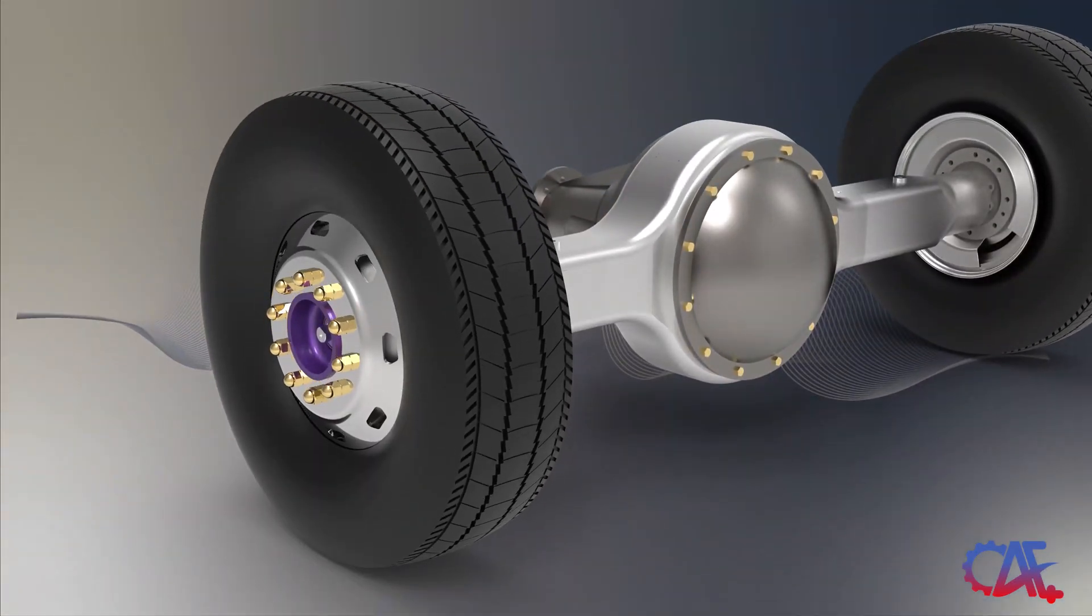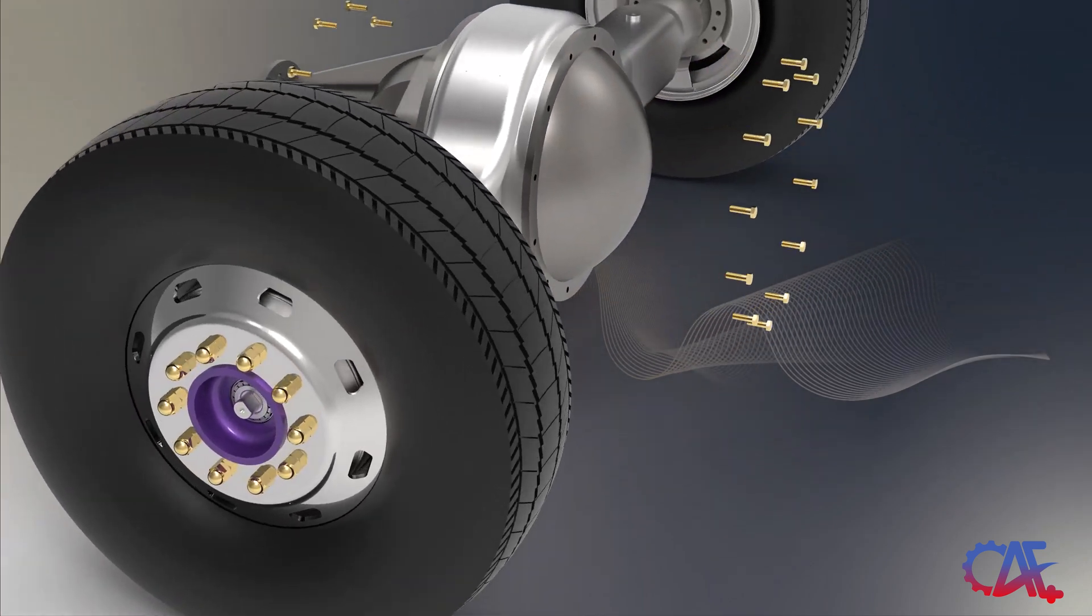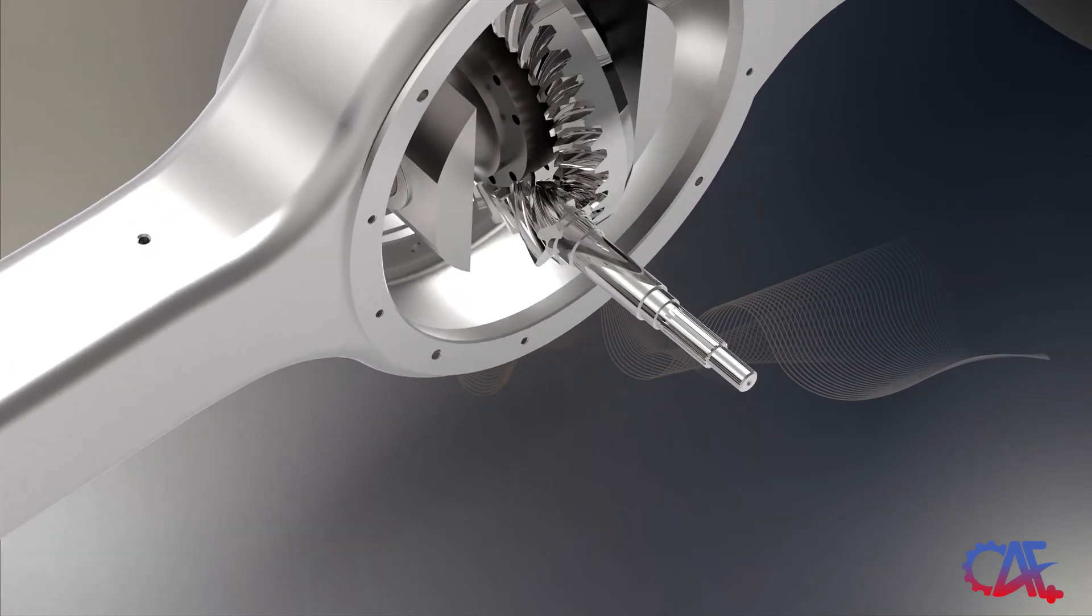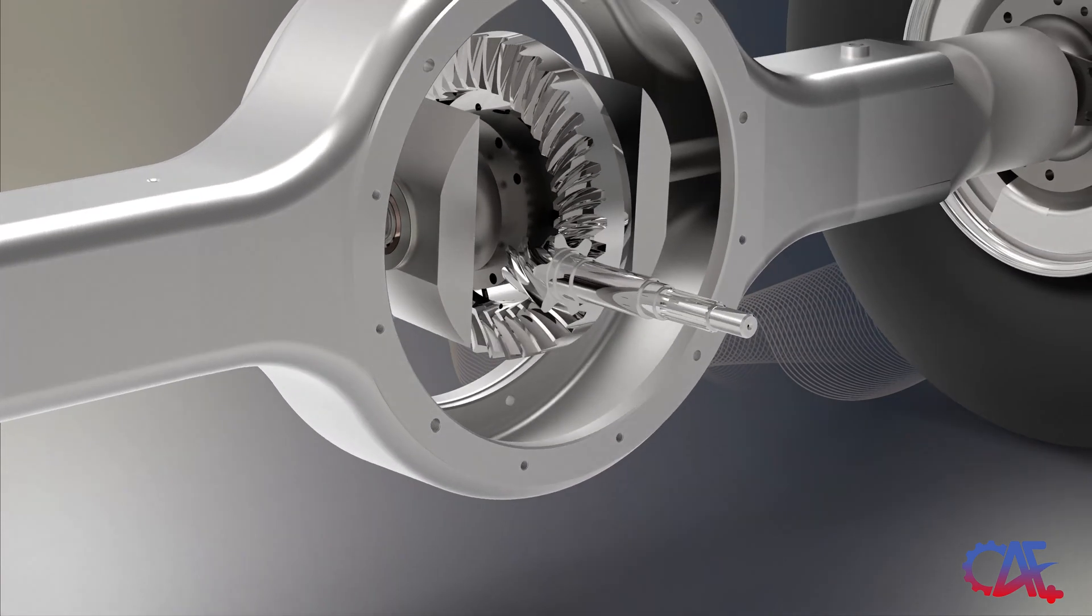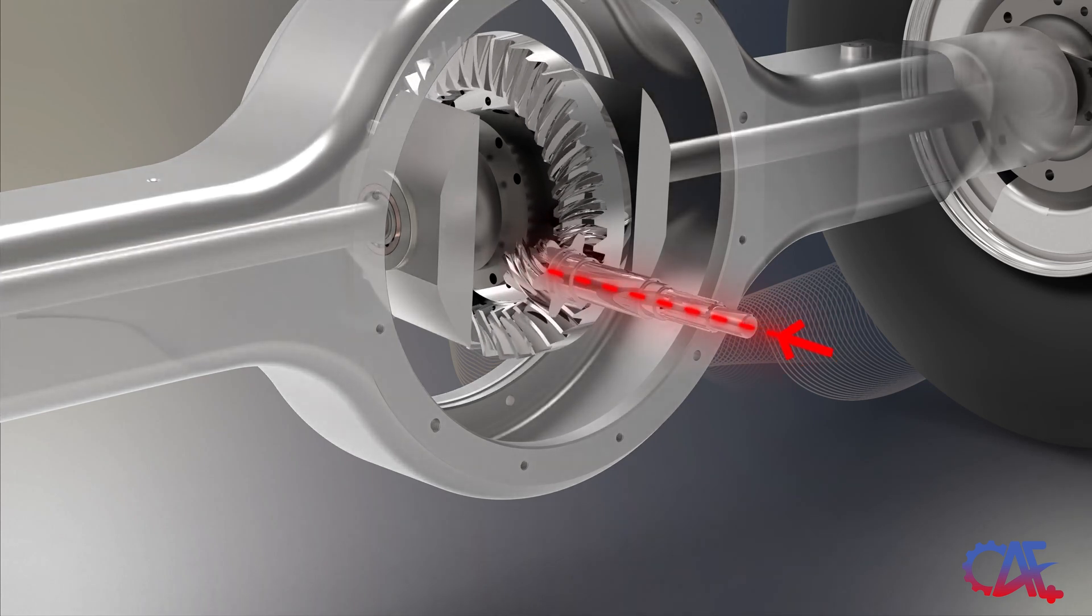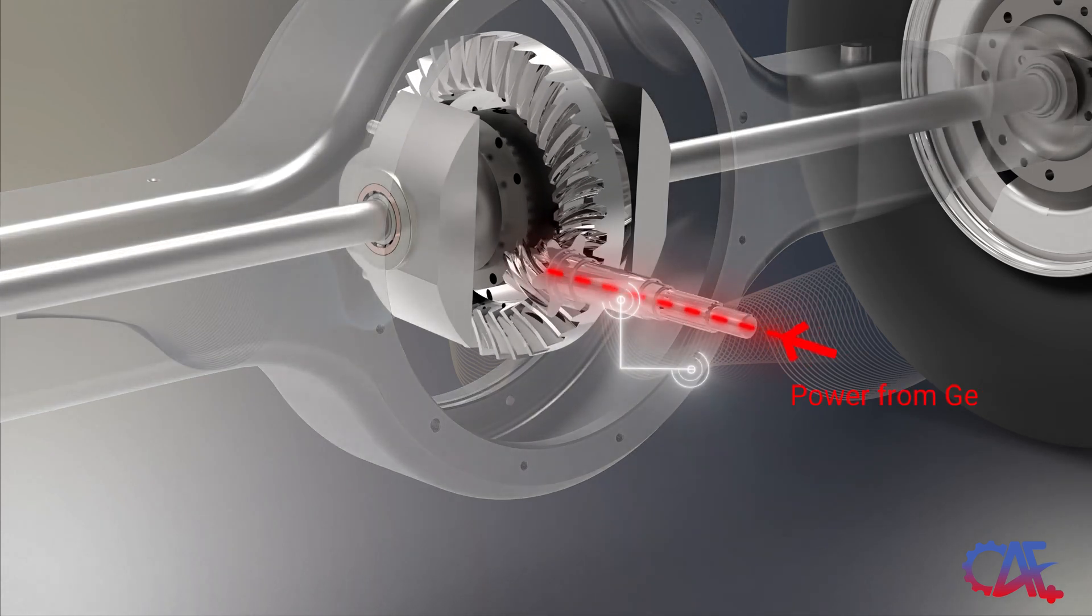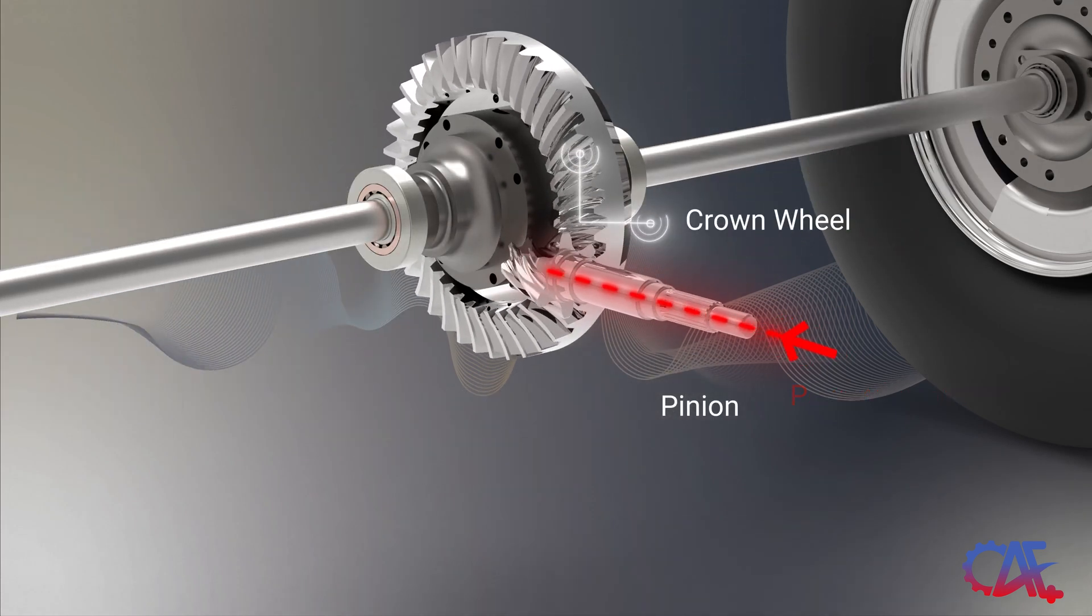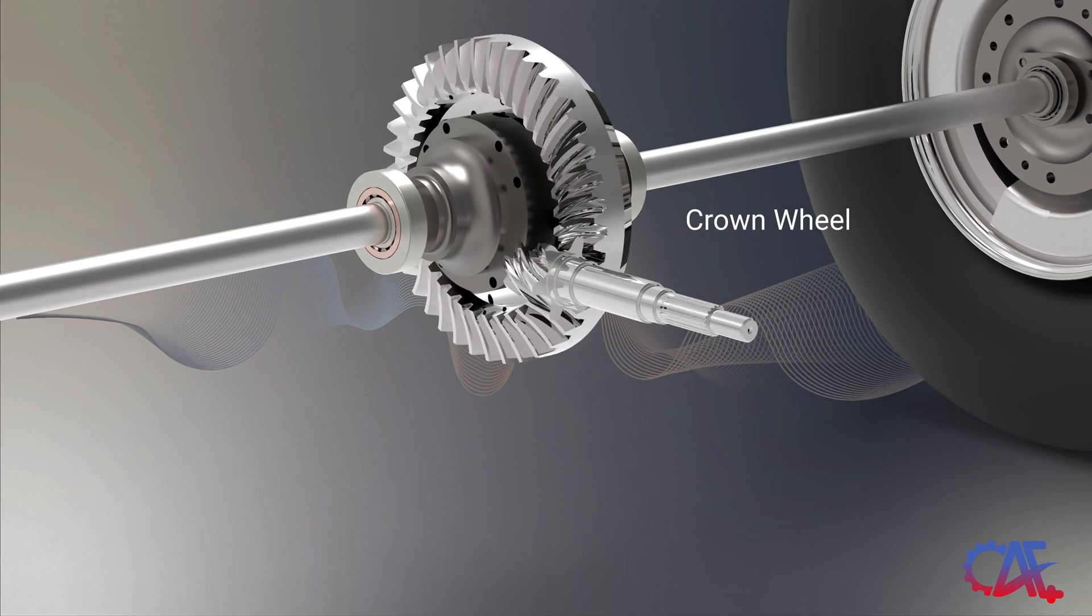Within the core of a truck's power transmission system, we have the rear axle drive. This crucial component not only supports the weight of the vehicle, but also plays a pivotal role in transferring power from the engine to the wheels, enabling your truck to move. The power from the gearbox is transferred through a pinion and a crown wheel to the rear axle.